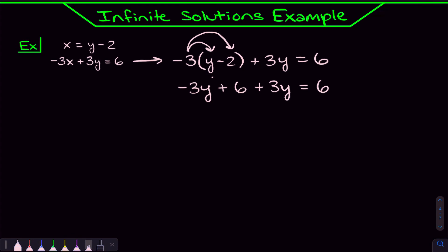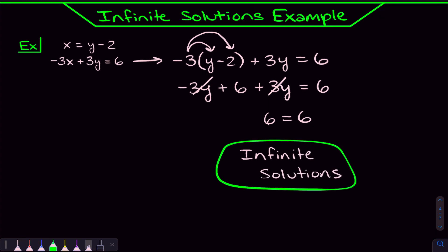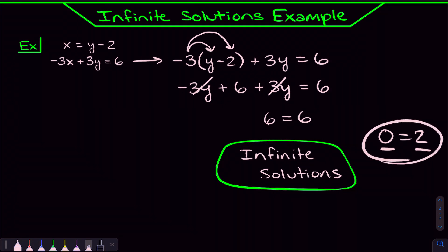Combining like terms on the left-hand side eliminates the Y's — we already eliminated the X's, and now the Y's are gone too. We're left with 6 equals 6. These are two numbers that do in fact equal each other, which means we have infinite solutions. 6 will always equal 6. However, if you had something like 0 equals 2, then 0 will never equal 2 — that's how you know there are no solutions.